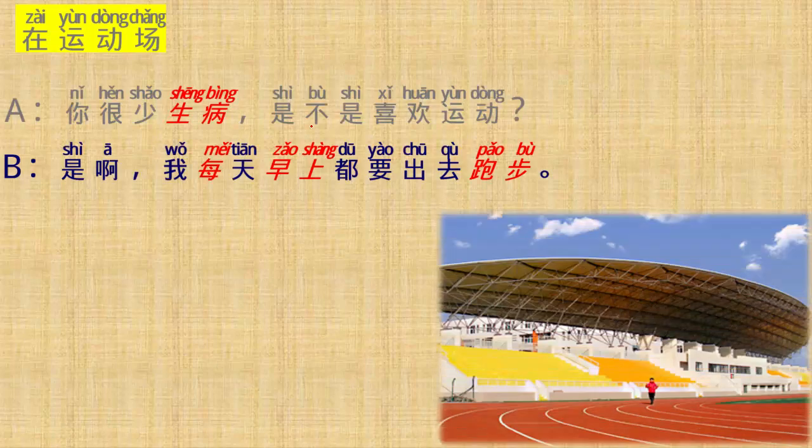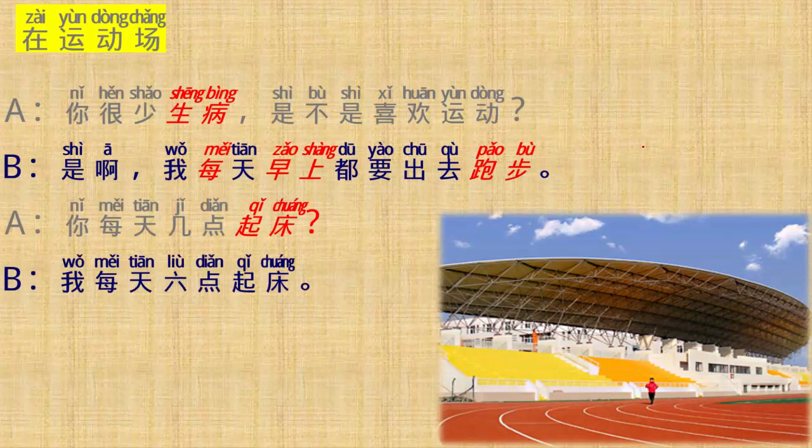好,我们看 our text. 在运动场. So this conversation happened on the sports ground 在运动场.